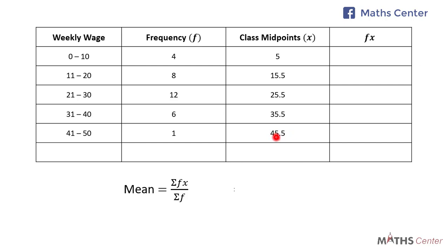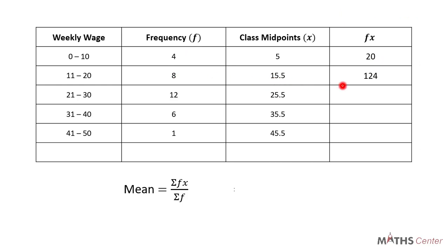We now have the x values so we can find the fx values by multiplying the f values by the x values. We have 4 times 5 which gives us 20. Then 8 times 15.5 which gives us 124. Then 12 times 25.5 which gives us 306. Then 6 times 35.5 which gives us 213. And 1 times 45.5 which is 45.5.